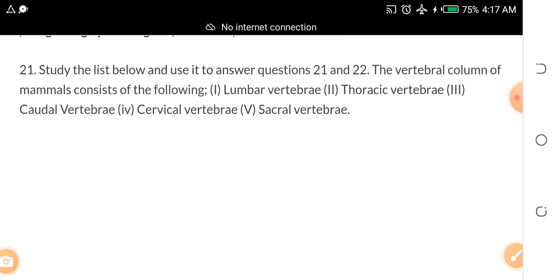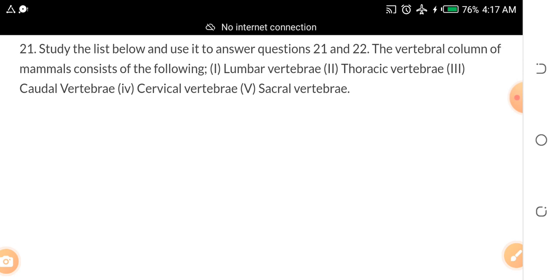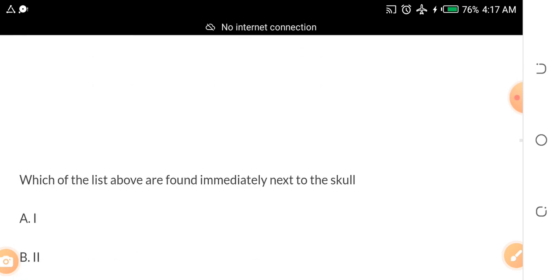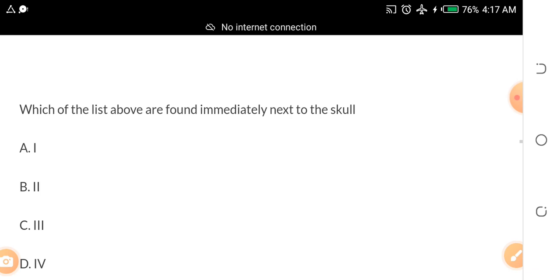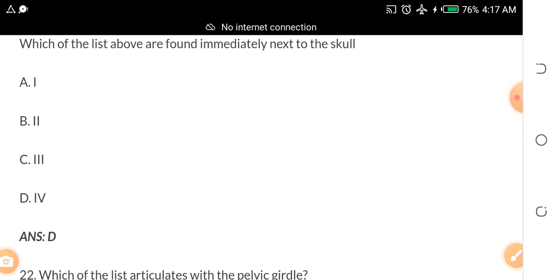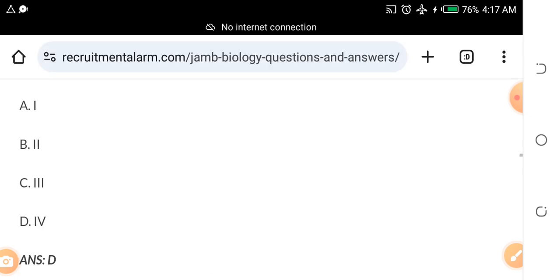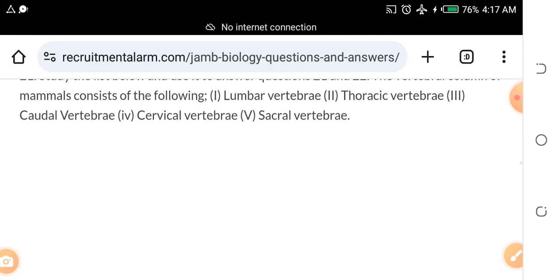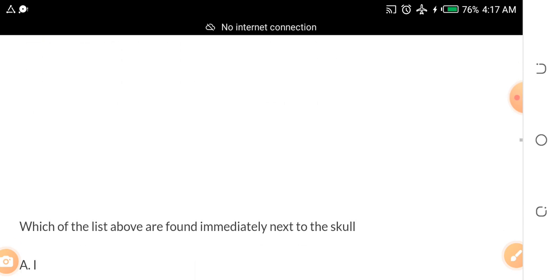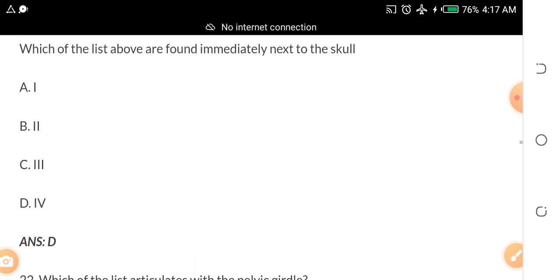Study the list below and use it to answer questions 21 and 22. The vertebral column of mammals consists of the following. Which of the lists above is found immediately next to the skull? A. I, B. II, C. III, D. IV. The answer is D, IV. And which one is IV? IV is cervical vertebrae. That is what you'll find after the skull.